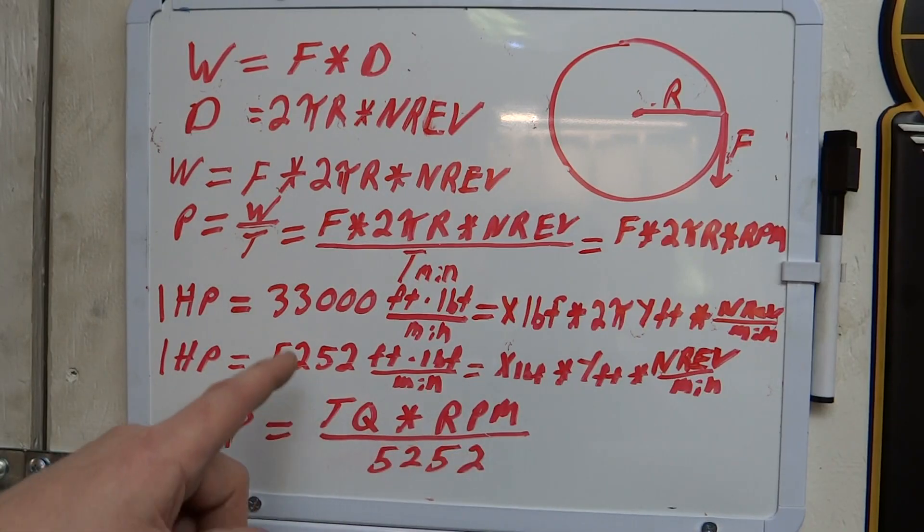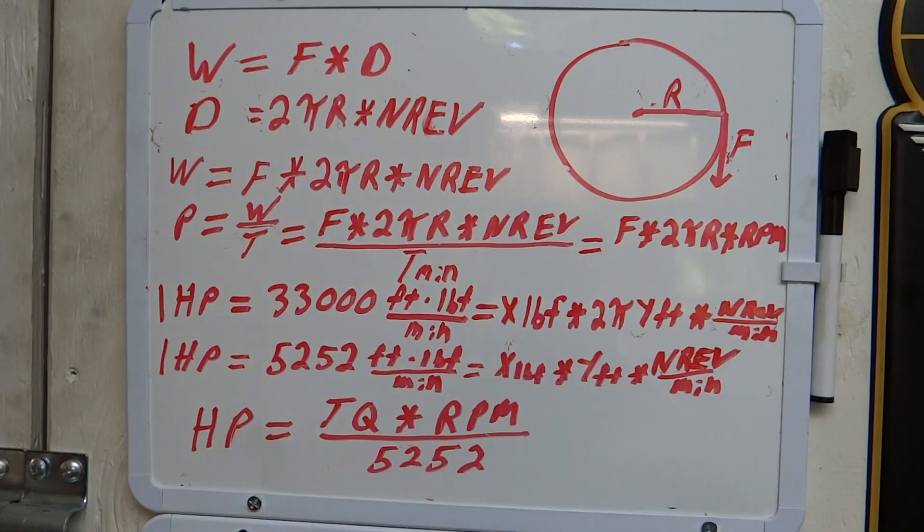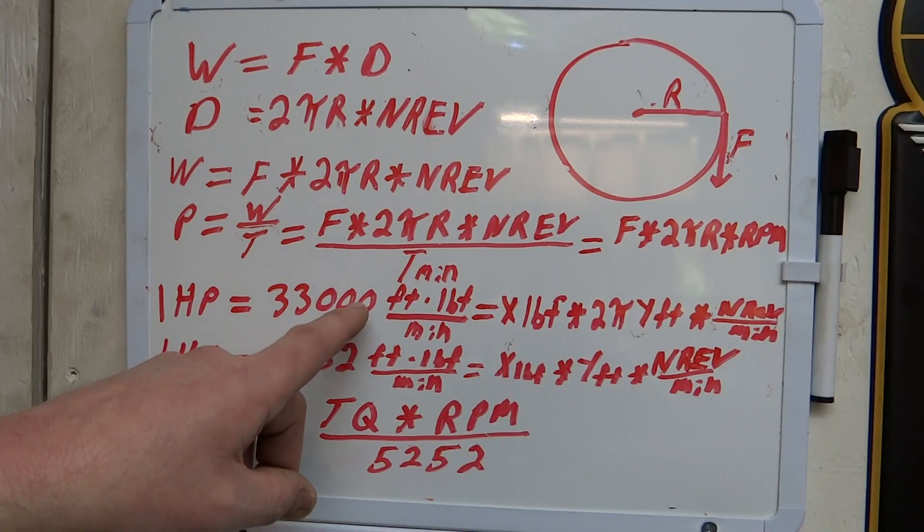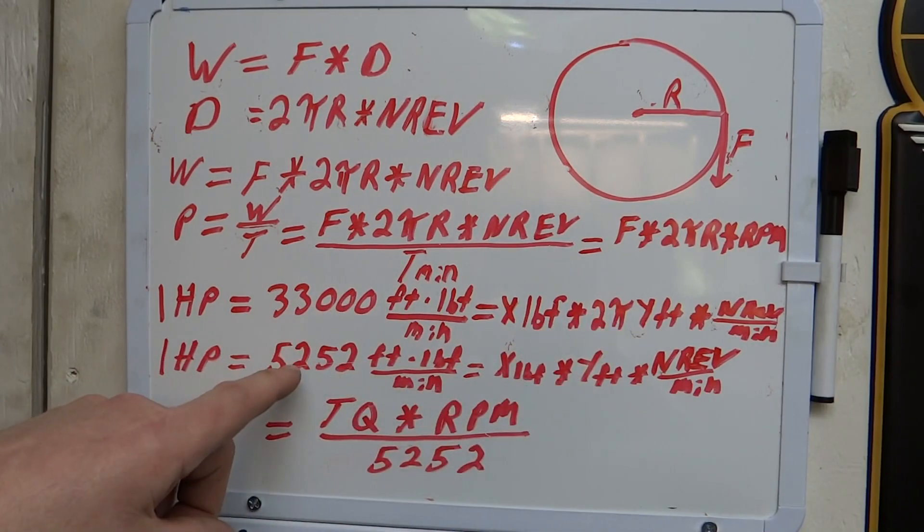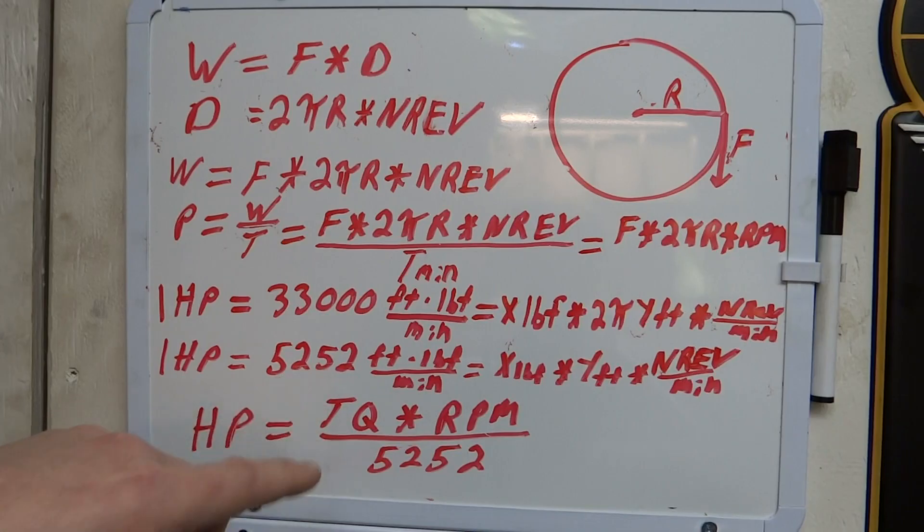So what I'm going to do in the next line is I'm going to divide this by 2π, and what that really comes out to is 33,000 divided by 2π, and it comes out to 5252.11, and that rounds easily to 5252. So 33,000 divided by 2π, and that's where that 5252 number comes from.